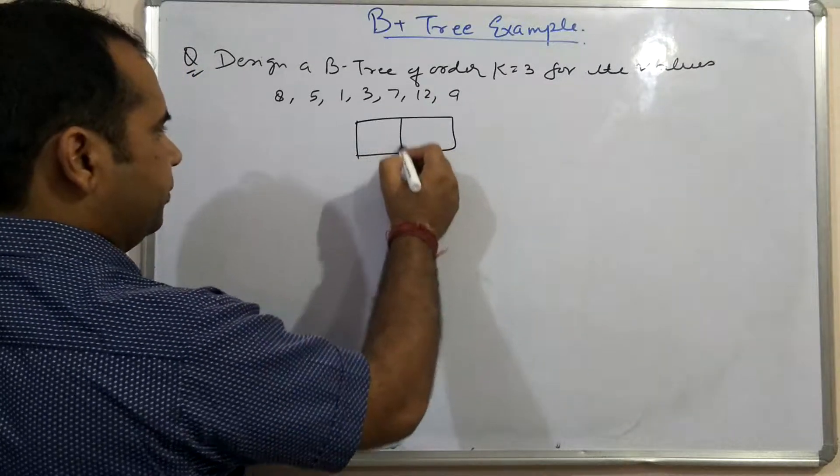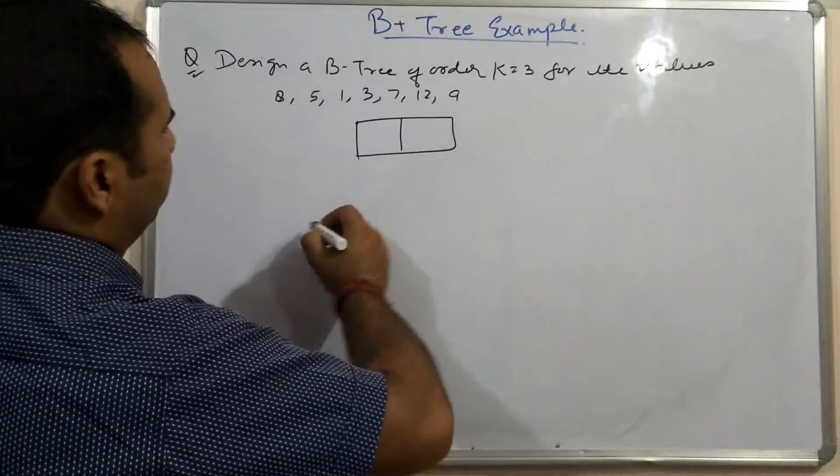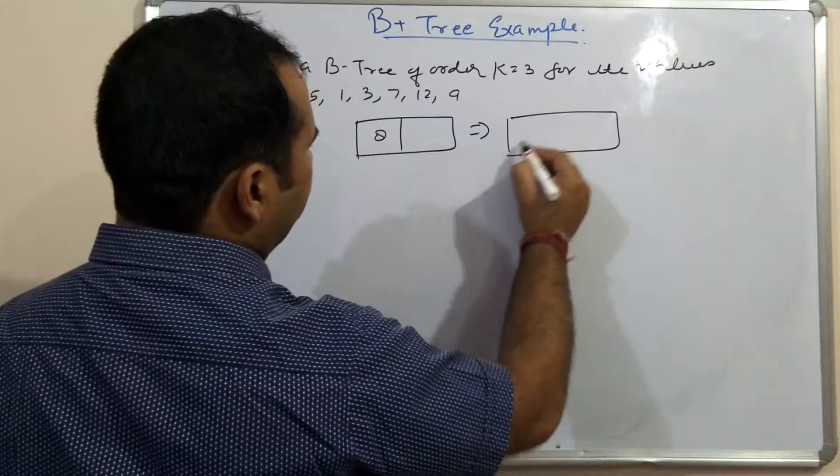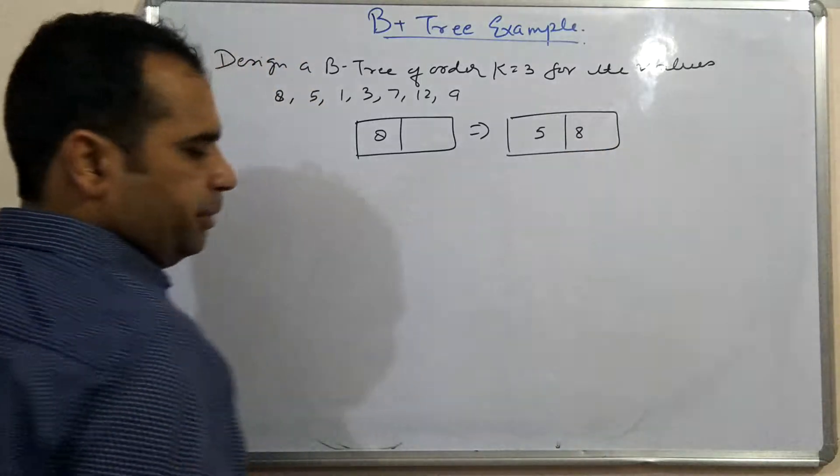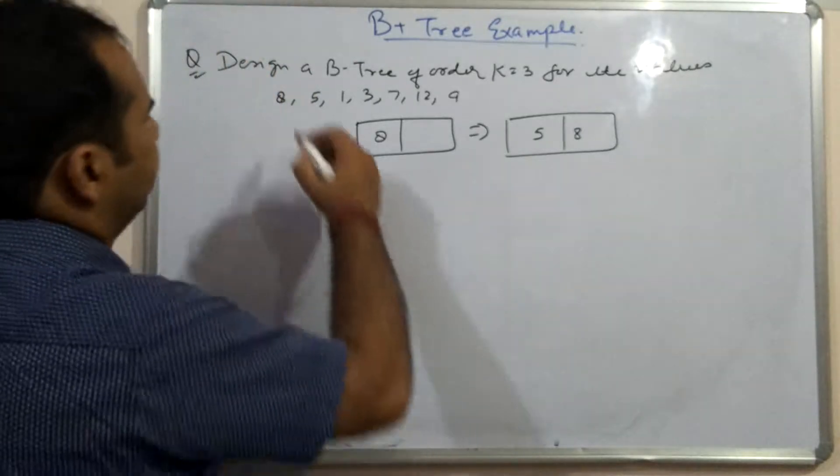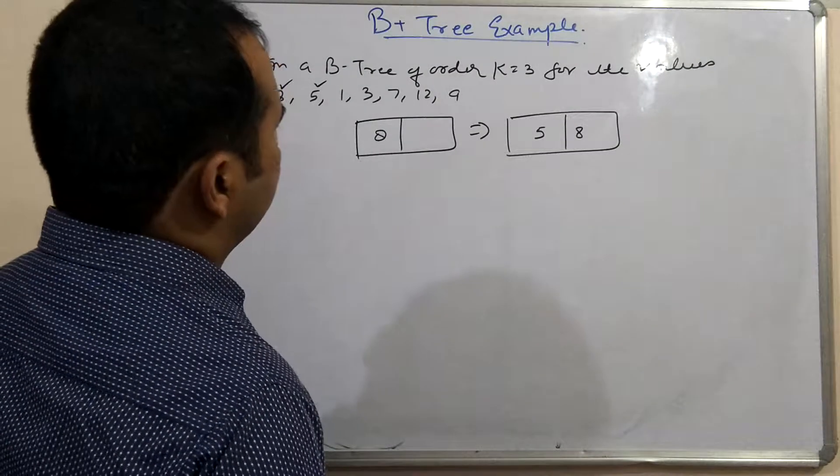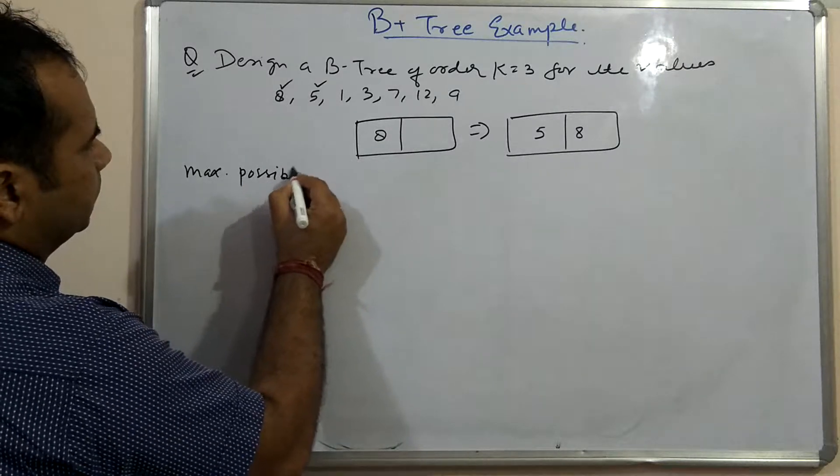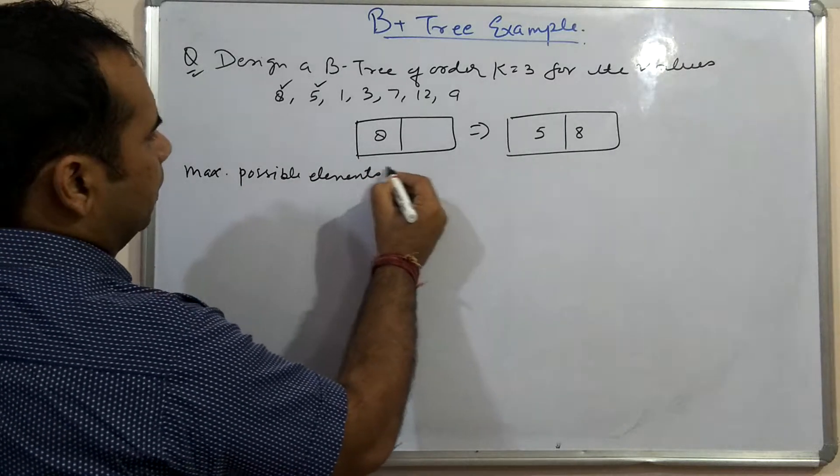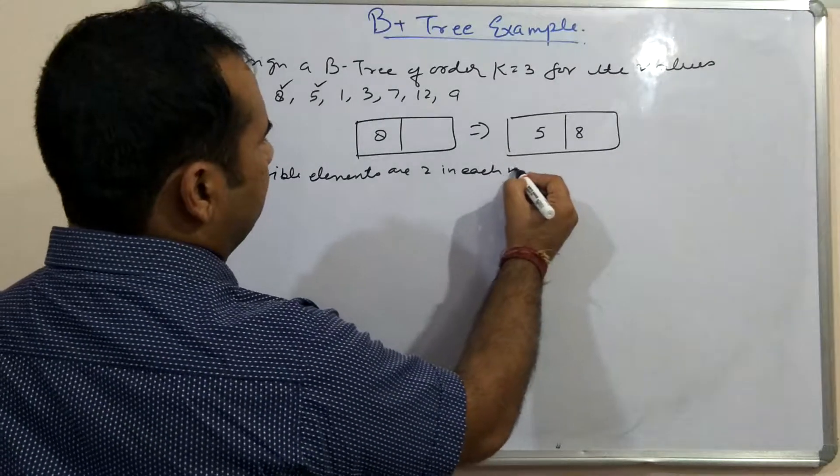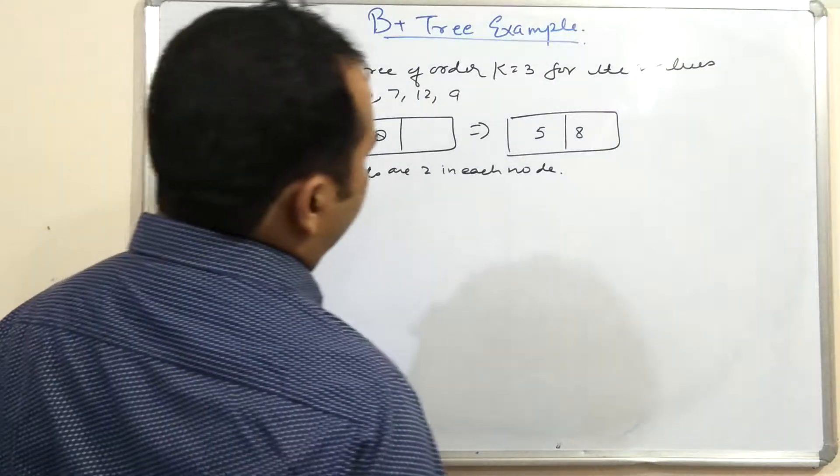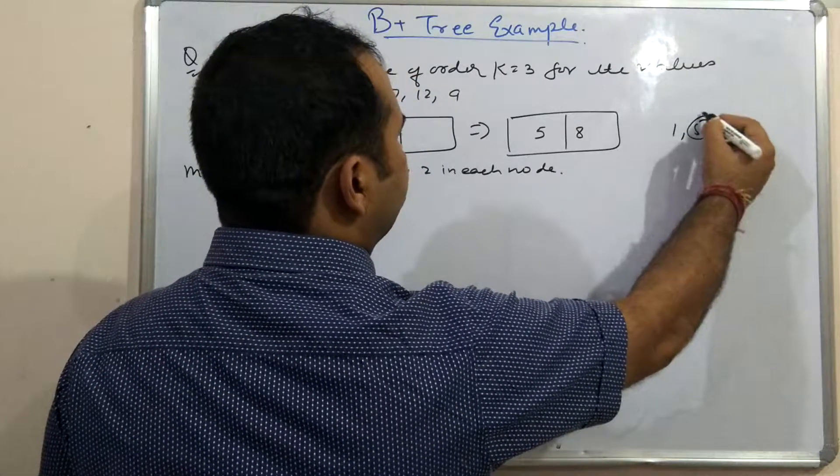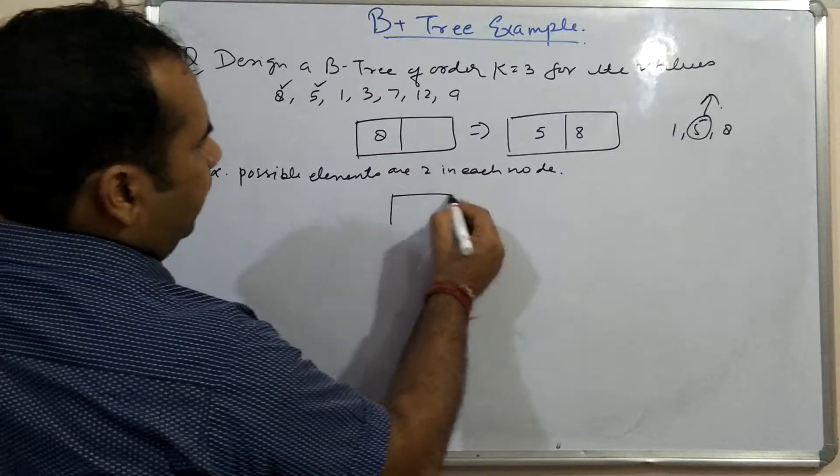So let us now start making a B+ tree. Look at this B+ tree, it has two values. First let us put 8, and after 8 comes 5. So 5 and 8, elements are always sorted. Now the next element is 1. The maximum possible elements are 2 in each node, so when 1 comes, there will be 1, 5, and 8 together. The middle one will split, so the tree will break.